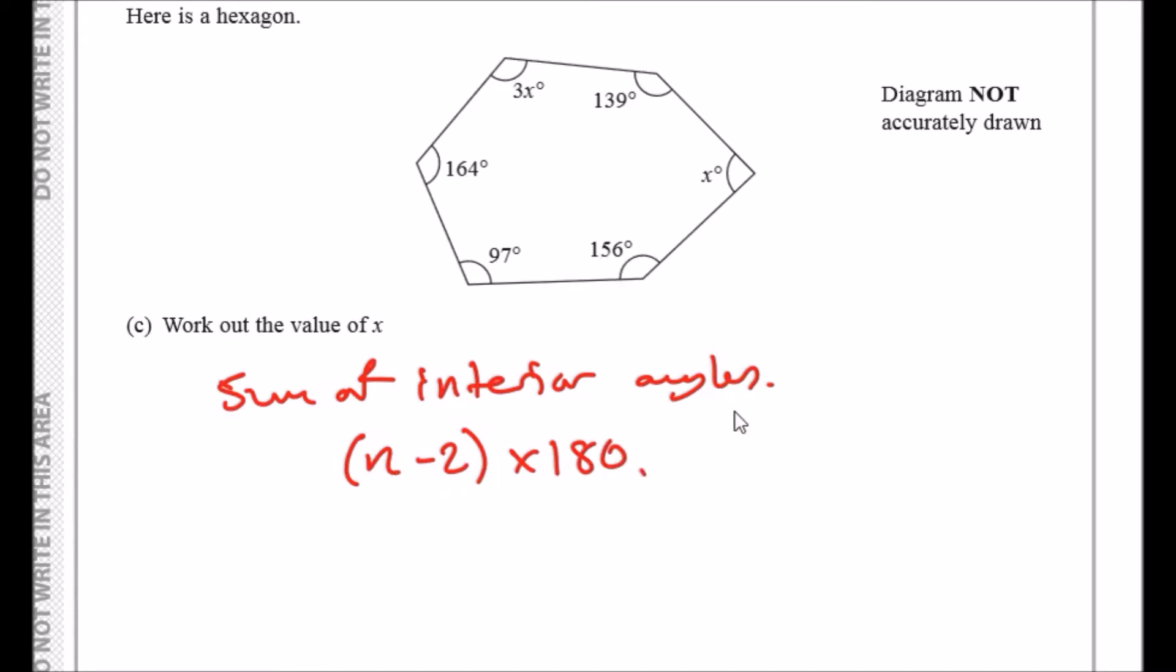For a hexagon, if you chose a triangle, we know a triangle has three sides, so if you use the formula 3 minus 2 is 1, 1 times 180 is 180 degrees. If you chose a square with four sides and plug in the formula, 4 take away 2 is 2, 2 times 180 is 360. So yes, the formula works perfectly.